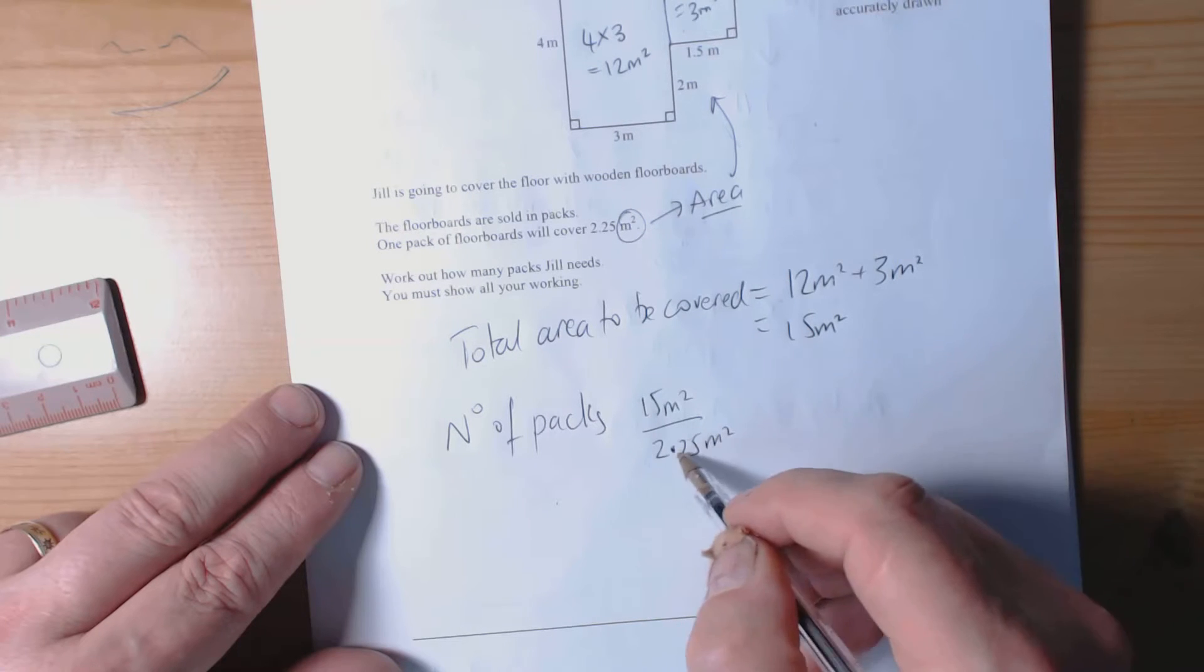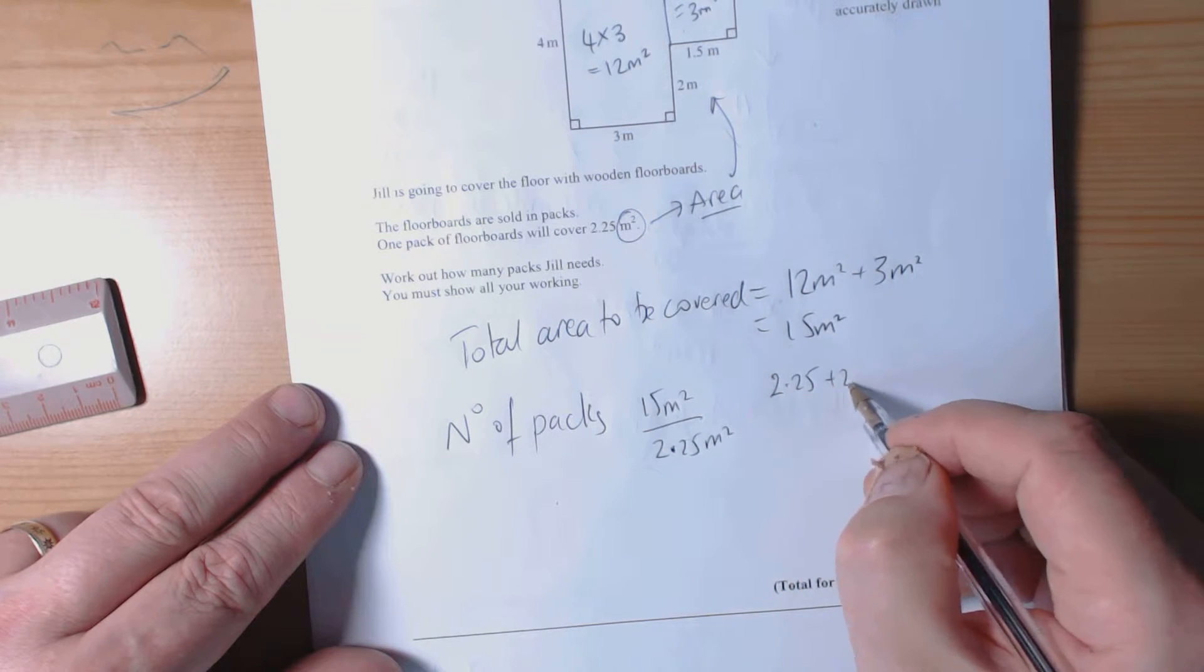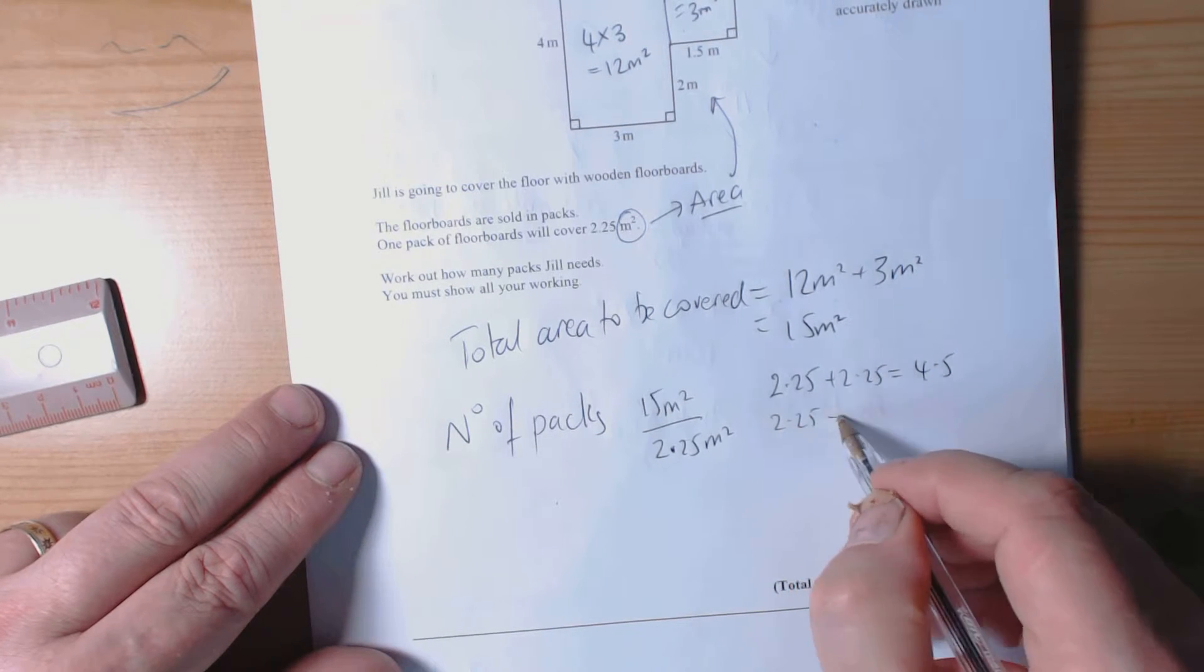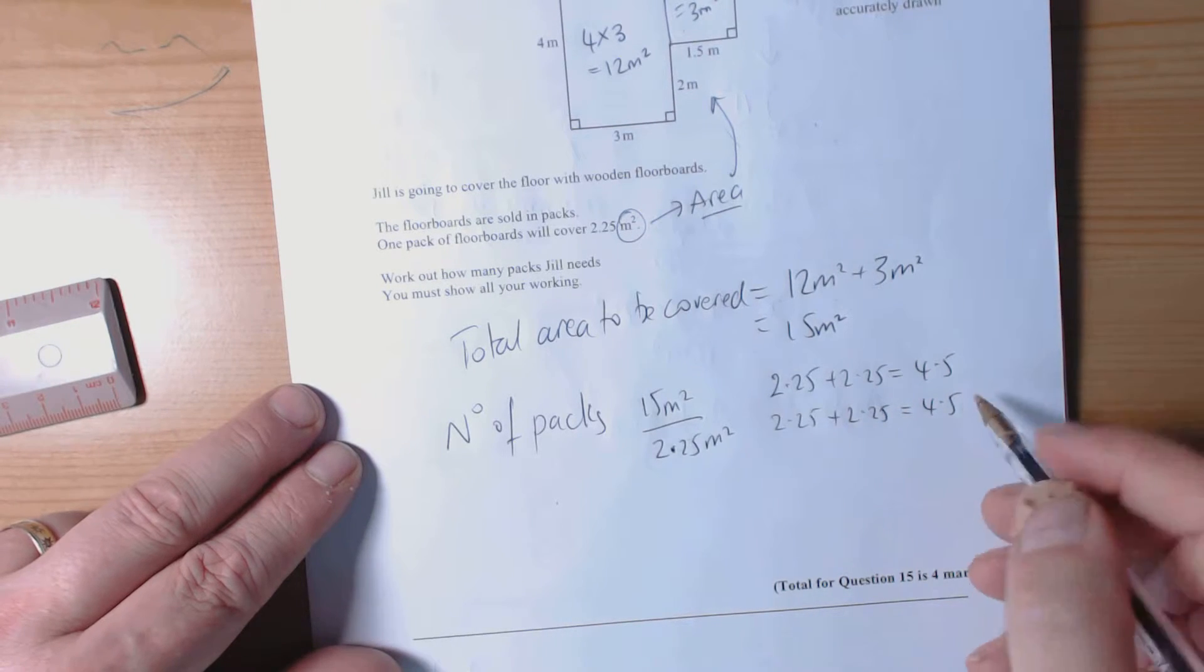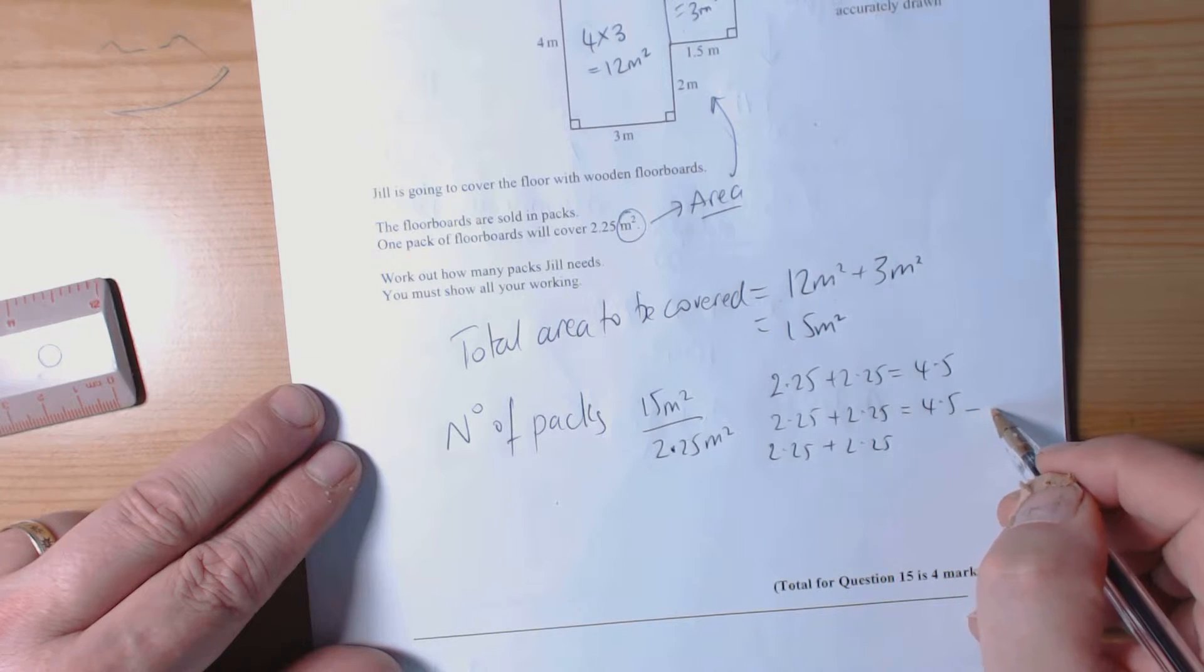So 2.25 plus 2.25 is 4.5. If we do that again, so 2.25 plus 2.25 is 4.5, and 2.25 plus 2.25. So far this is 9, so I've done another 4.5.